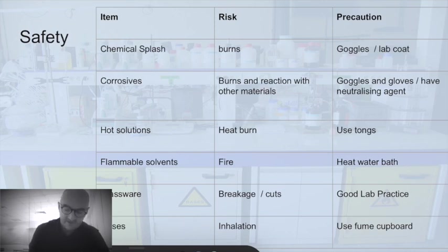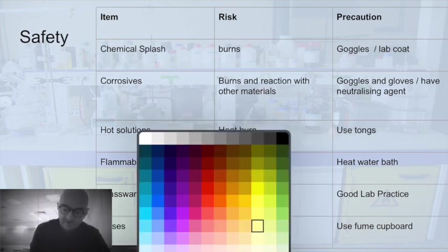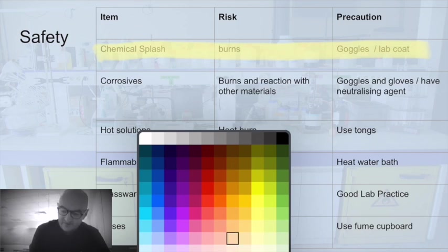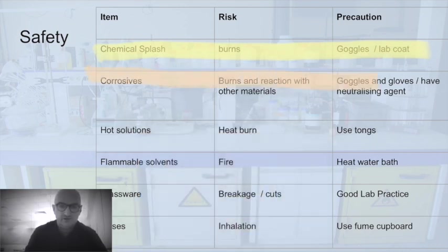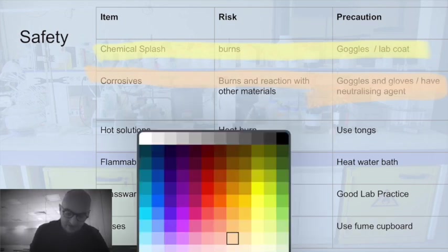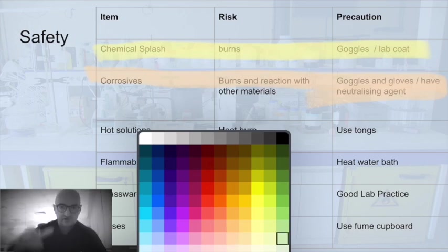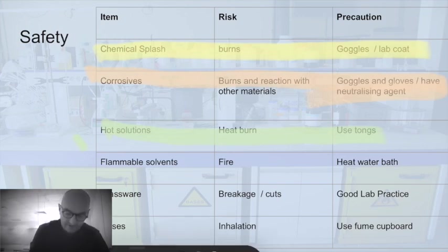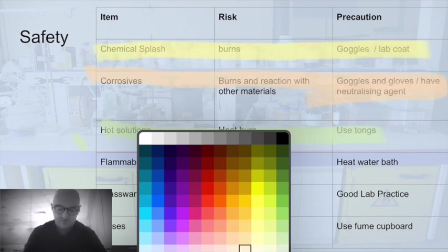So let's see. Chemical splash. We want to say goggles and a lab coat. Playing now. Corrosives. Goggles, lab coat, and maybe have a neutralizing agent as well to neutralize any of the corrosive stuff which has been dragged off. What color should we go for? Green. Hot solution. Clearly used tongs. Those metal things you can use to pick things up. Flammable solvents. We can use a water bath so we're not putting a flame onto the bottom of our flammable solvents. Water bath. It's a beautiful excursion in pastels.